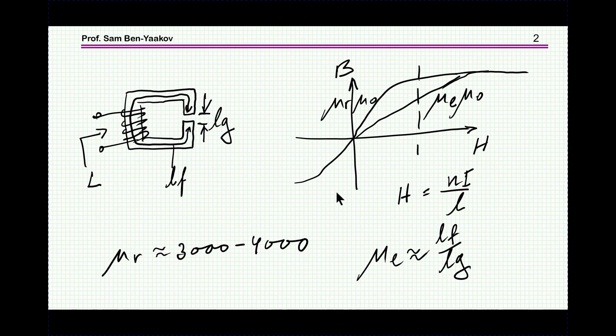Now the intuitive way to explain it is the following. The relative permeability of the ferrite material is very high.